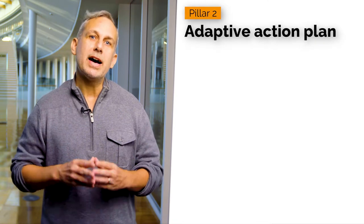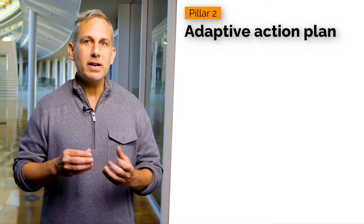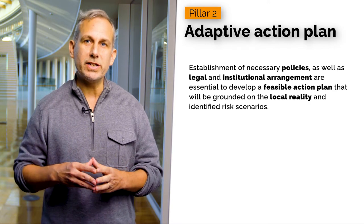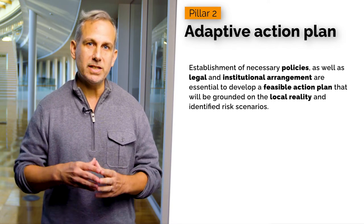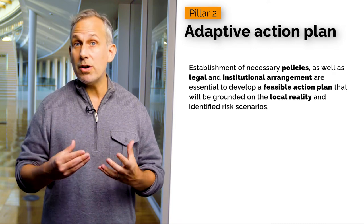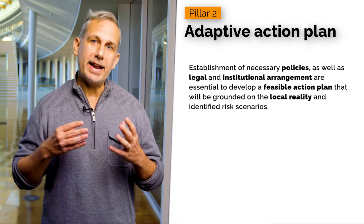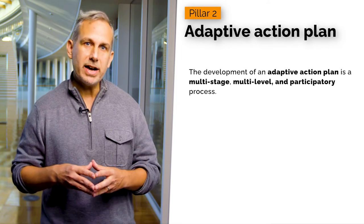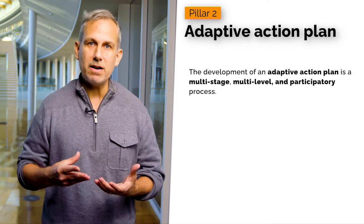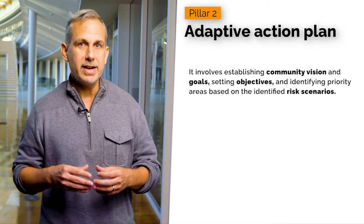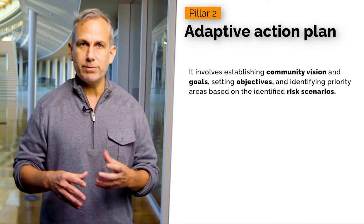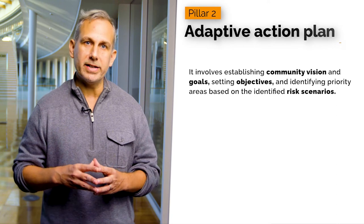Pillar 2: Adaptive Action Plan. Establishment of necessary policies as well as legal and institutional arrangements are essential to develop a feasible action plan that will be grounded on local reality and identified risk scenarios. The development of an adaptive action plan is a multi-stage, multi-level, and participatory process. It involves establishing community vision and goals, setting objectives, and identifying priority areas based on identified risk scenarios.